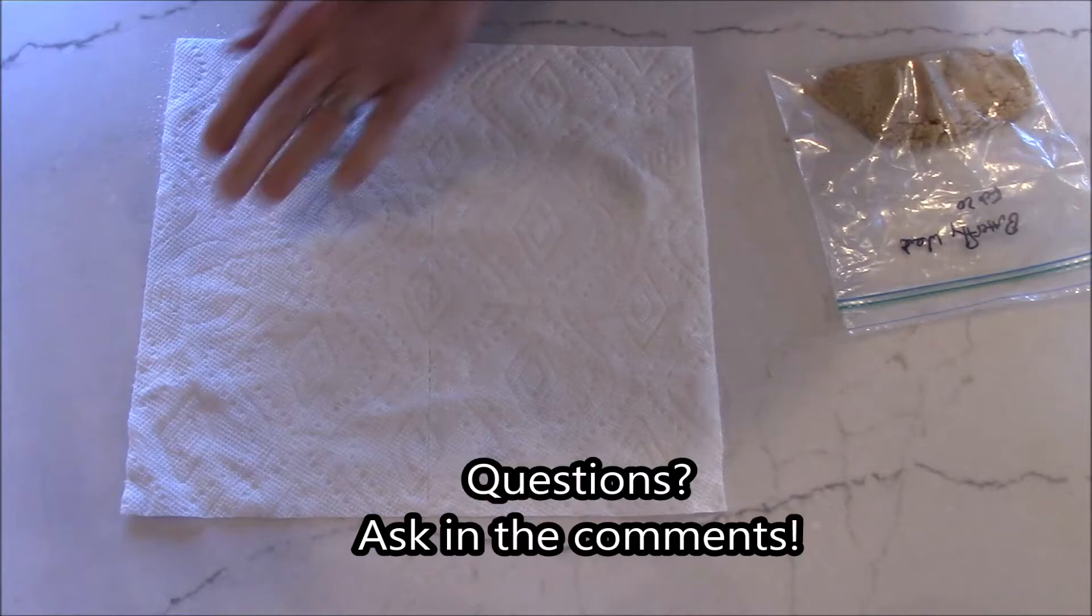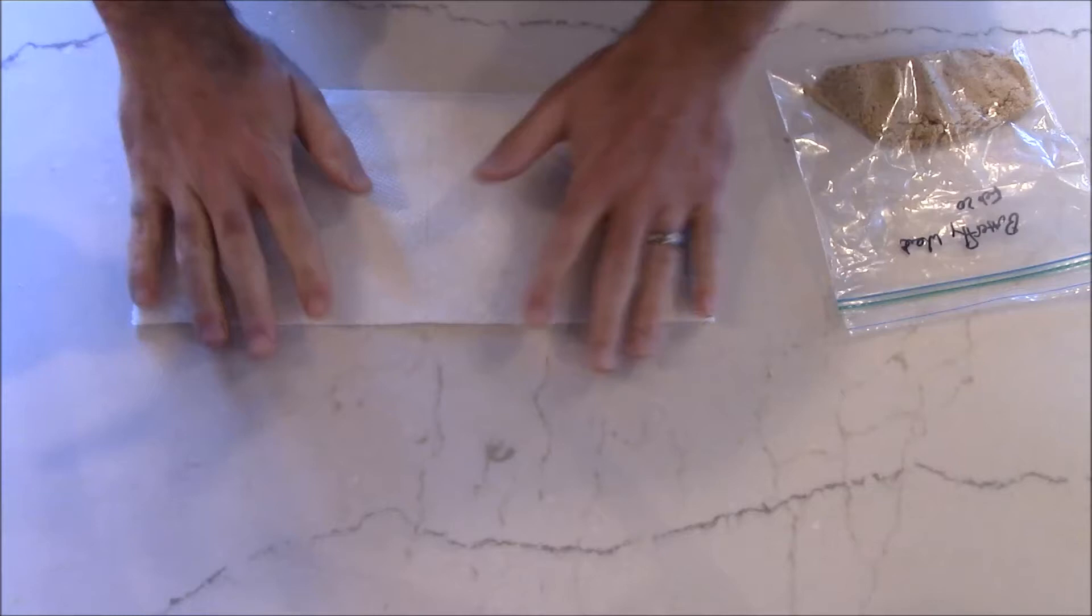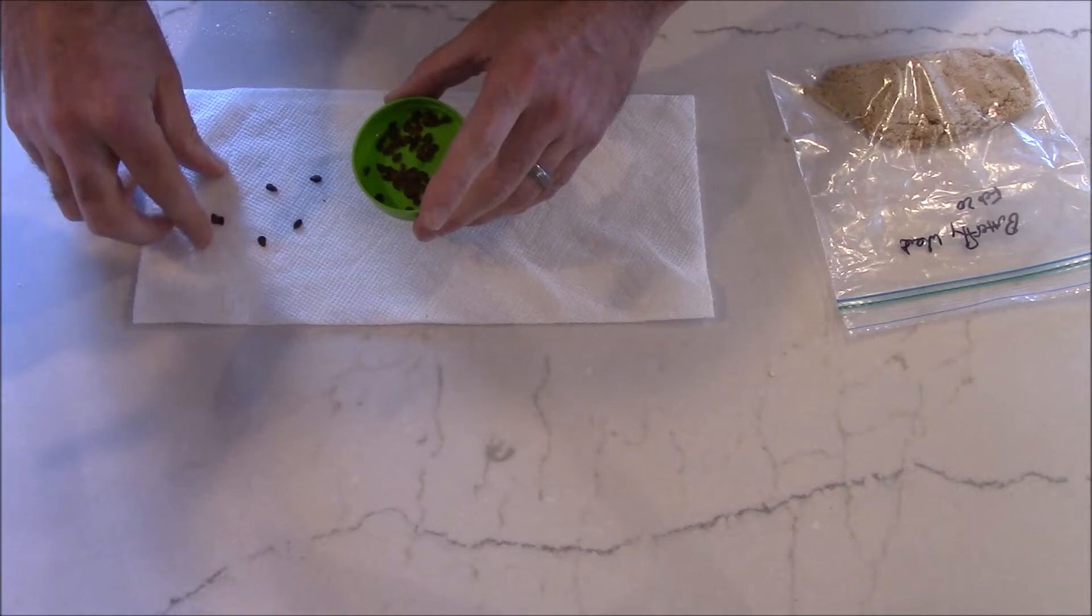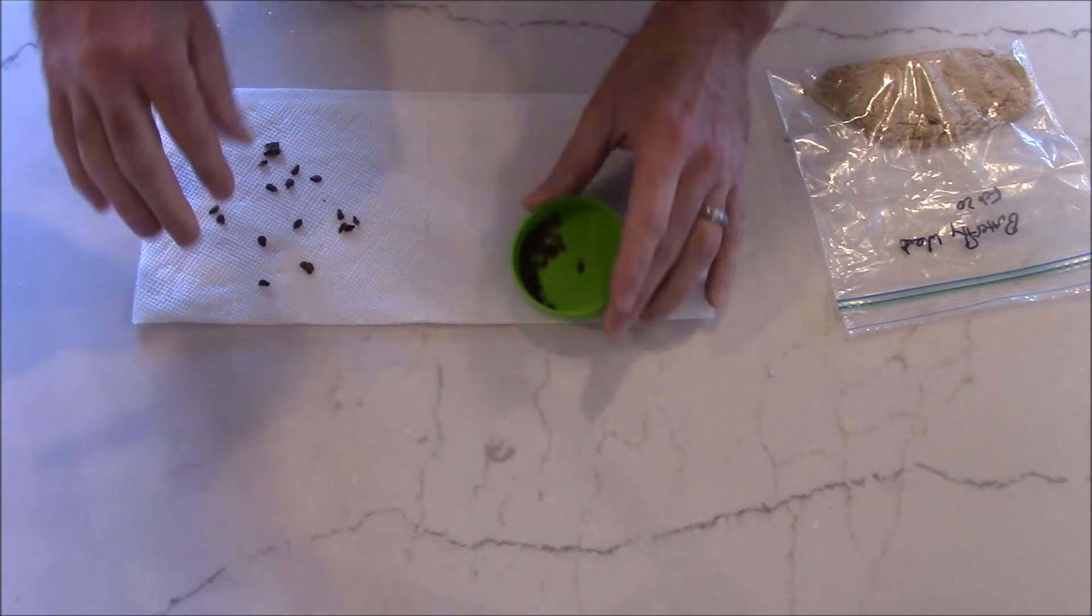But after that, fold it back in half and then sprinkle the seeds on one half of the remaining surface area. We're going to do it like that because we'll fold it over like a book. And once that's done, we really just need to put it into a Ziploc bag and seal it up like before.